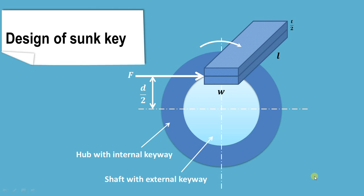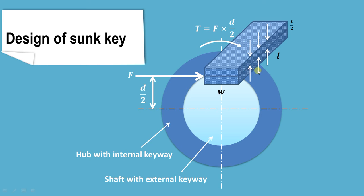Similarly, another failure that takes place because of the torque is crushing. Torque is tangential force into radius, and because of this torque the portion of the key present in the hub will get crushed — localized compression, which is known as crushing. The resistance is provided by the material at the junction of the shaft and hub. The area resisting crushing is length into T divided by 2, so the area resisting crushing is L into T by 2.